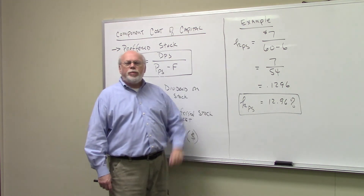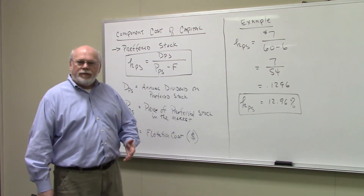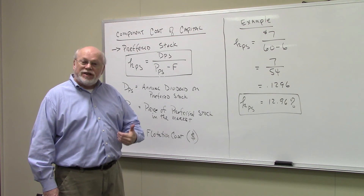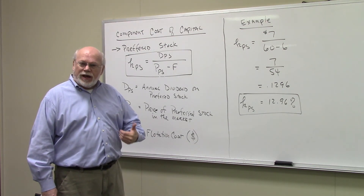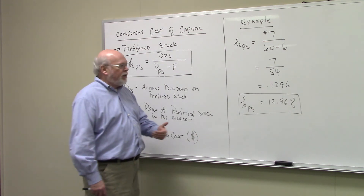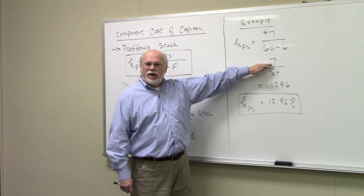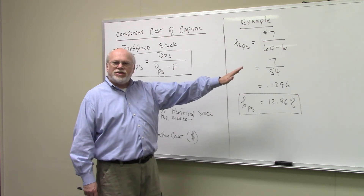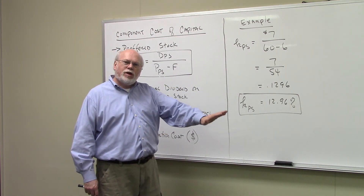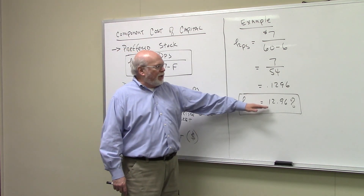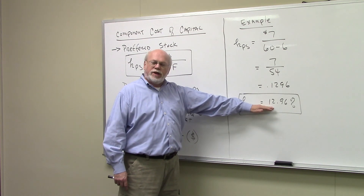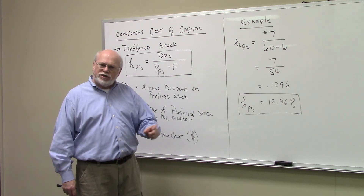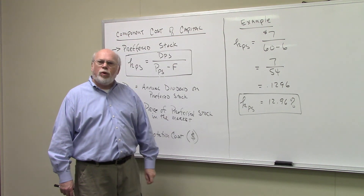As an example, consider a preferred stock that pays $7 a year in annual dividends. The price of the preferred stock in the market is $60, and the flotation cost is $6 — the investment banker charges us $6 a share to sell the preferred stock. The annual dividend of $7 is in the numerator, and the net price in the denominator is $60 minus $6, which equals $54. Doing the math, we get 0.1296, or 12.96% — the component cost of capital for the preferred stock.